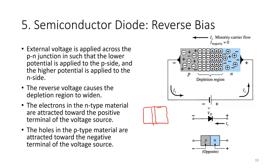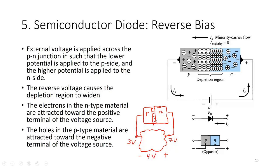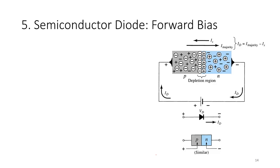Reverse bias can also occur in a circuit where the voltage at the N-side node is higher than the voltage at the P-side node — for example, 7 volts biasing N and 3 volts biasing P gives a 4-volt reverse bias. When in reverse bias, typically there will be no current flow and the diode acts like an open switch.